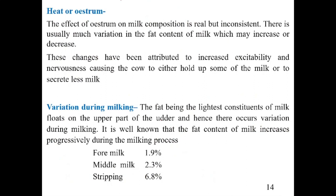The effect of heat or oestrus on milk composition is real but inconsistent — there is no consistent trend during heat. The main component affected is fat content, which may either increase or decrease. These changes have been attributed to increased excitability and nervousness, causing the cow to hold up some milk or secrete less milk, thereby decreasing milk yield.